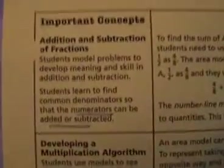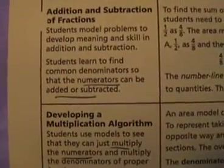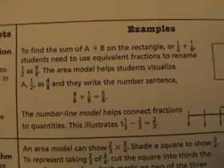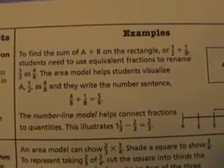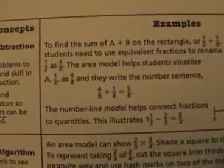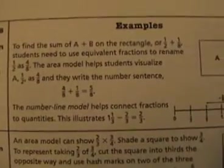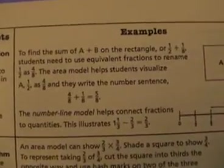Important concepts. Students learn to find common denominators so the numerators can be added or subtracted. That's the standard method. So over here, to find the sum on the rectangle, seen as the equivalent fraction to rename the one half as four eighths. The area model helps visualize this. What is that? That's an example which is not in the book. Now, why did they put it here?